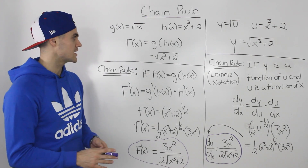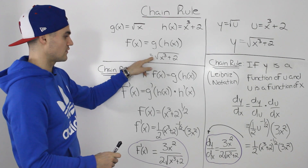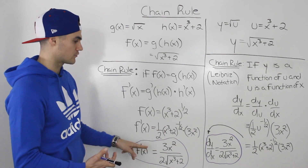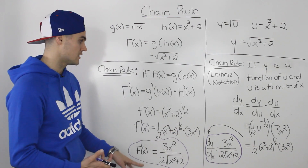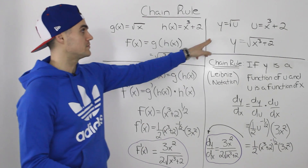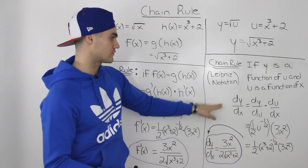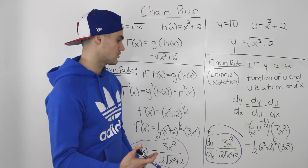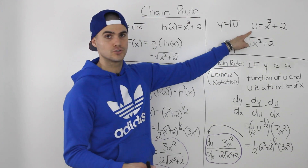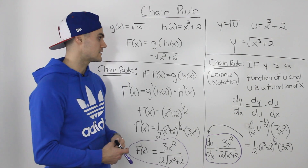Notice how we got the same derivative using the chain rule in two different notations. Sometimes you'll be given the composite function directly and apply the chain rule by using the power of a function approach. Other times the function will be separated into two parts — y in terms of u and u in terms of x — and you apply the Leibniz notation process. Either way, make sure your final derivative is all in terms of x by substituting the original u expression back in. Make sure you're comfortable with both formats, as you'll encounter both in your textbook.